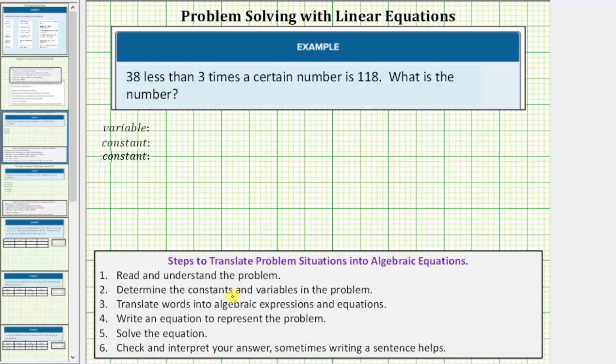Step two, determine the constants and variables in the problem. The variable represents the unknown, which is the number. Let's let x equal the number. Thirty-eight and 118 don't change. These are the constants.